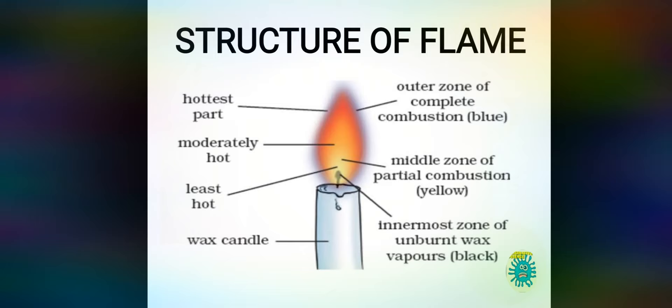You must have seen goldsmiths using the outermost zone for melting and molding gold because it is the hottest area of the flame. Then the middle zone appears yellow in color and it is moderately hot. Then we come to the innermost zone, which appears black in color because of unburned wax vapor, and it is the least hot area of the flame.